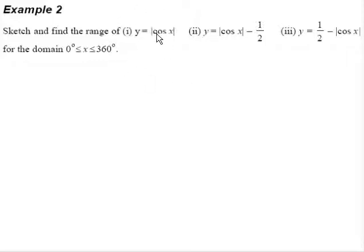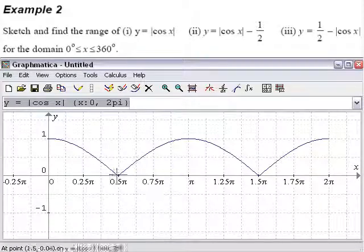Alright, so let's tackle part 1 first. How does y equals absolute cosine x look like? So here we go. This is how it looks like. This is our y equals absolute cosine x.